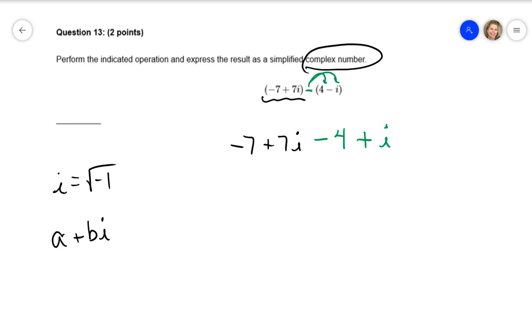And then I would combine like terms. You're going to add the negative 7 to the negative 4 because they're both the real number part. That's what the a is. So negative 7 and negative 4 is negative 11.